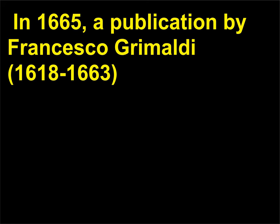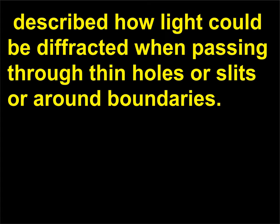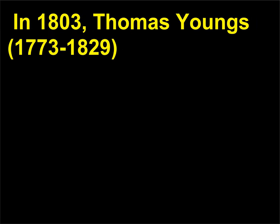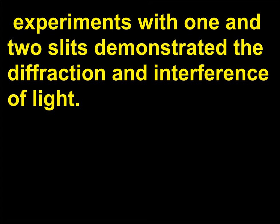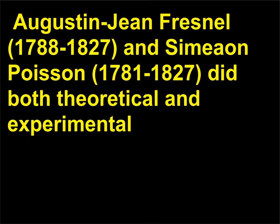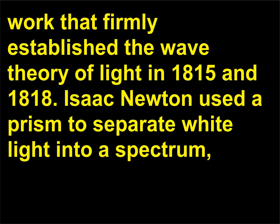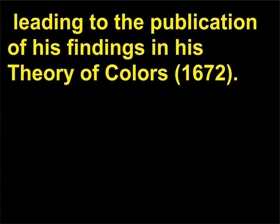In 1665, a publication by Francesco Grimaldi (1618-1663) described how light could be diffracted when passing through thin holes or slits or around boundaries. In 1803, Thomas Young's (1773-1829) experiments with one and two slits demonstrated the diffraction and interference of light. Augustin Jean Fresnel (1788-1827) and Siméon Denis Poisson (1781-1840) did both theoretical and experimental work that firmly established the wave theory of light in 1815 and 1818. Isaac Newton used a prism to separate white light into a spectrum, leading to the publication of his findings in his theory of colors, 1672.